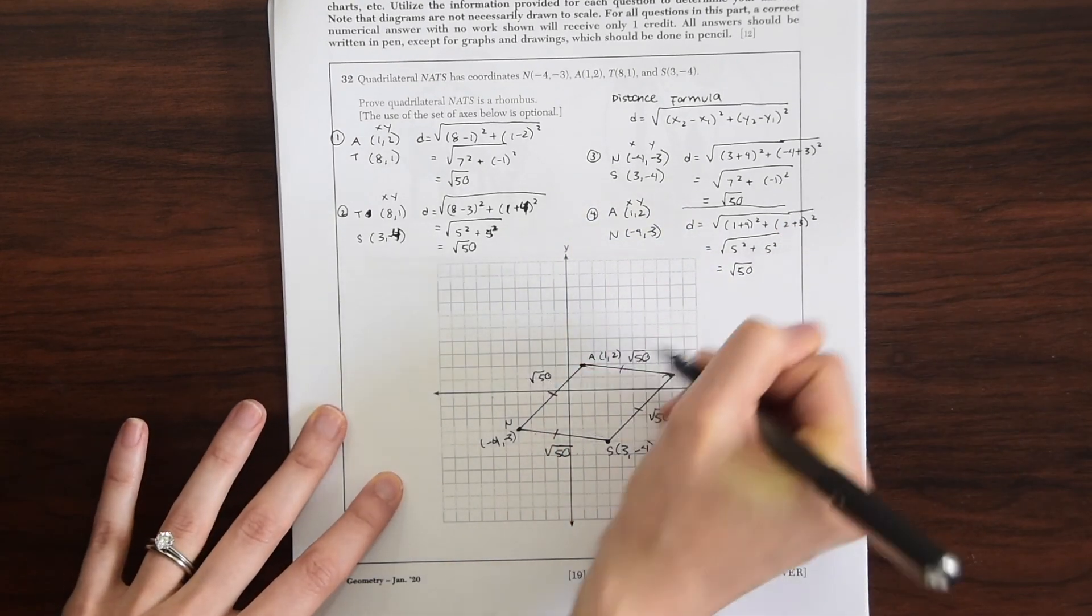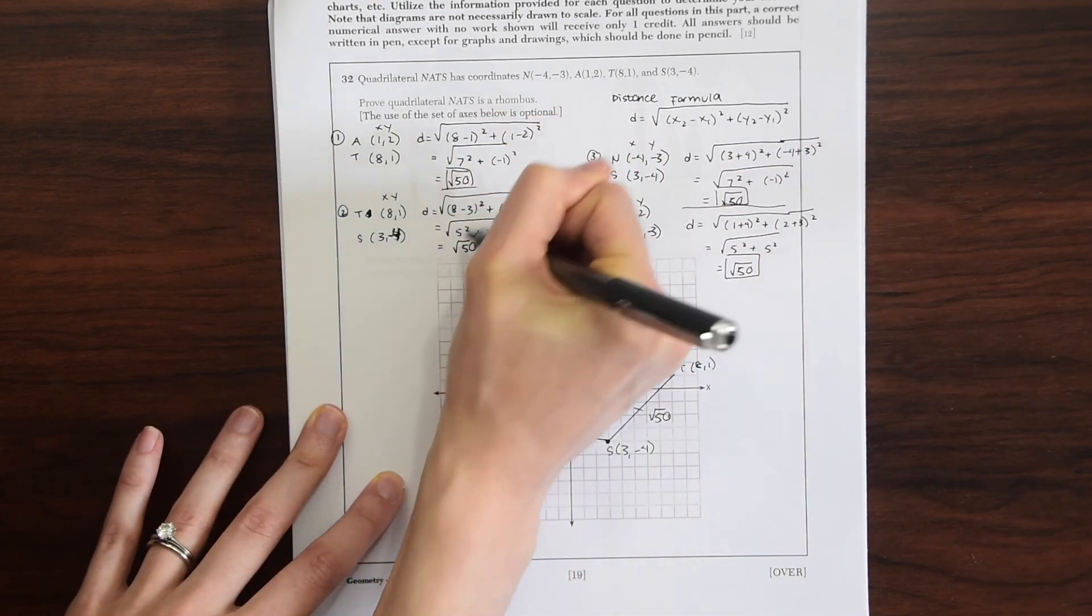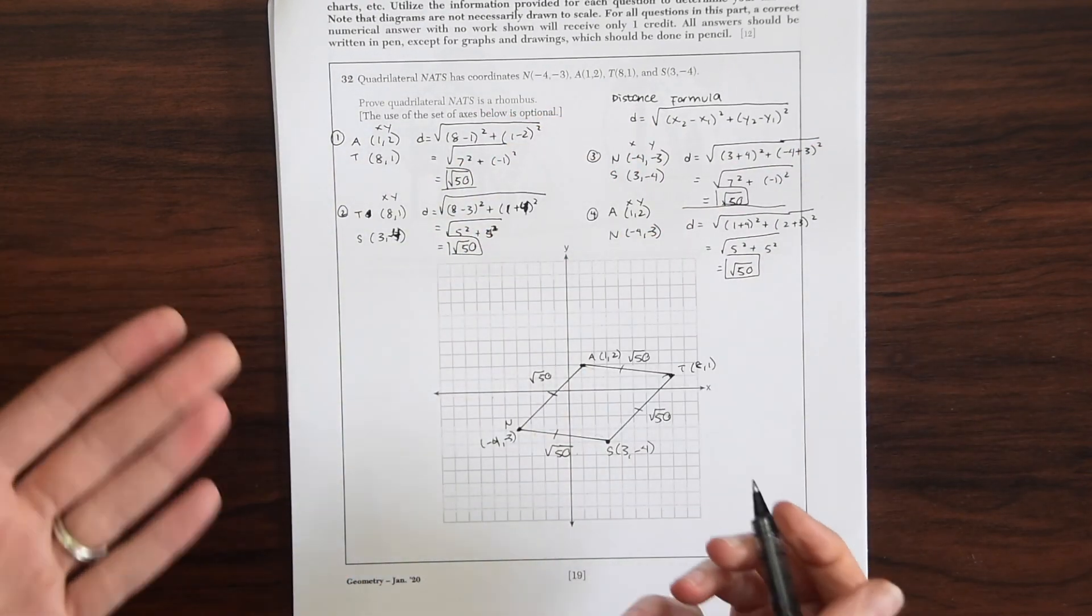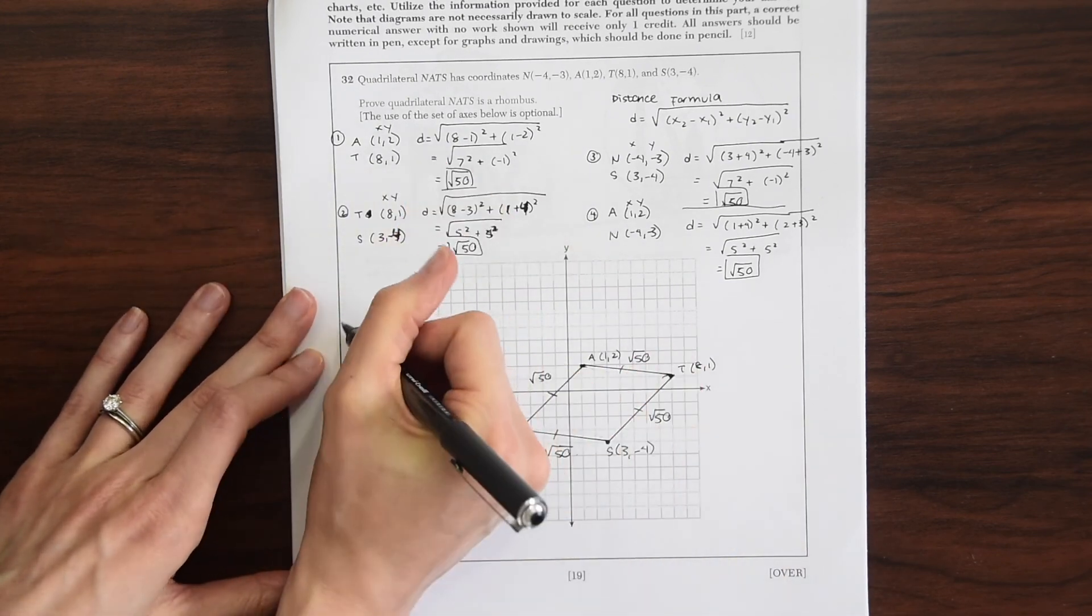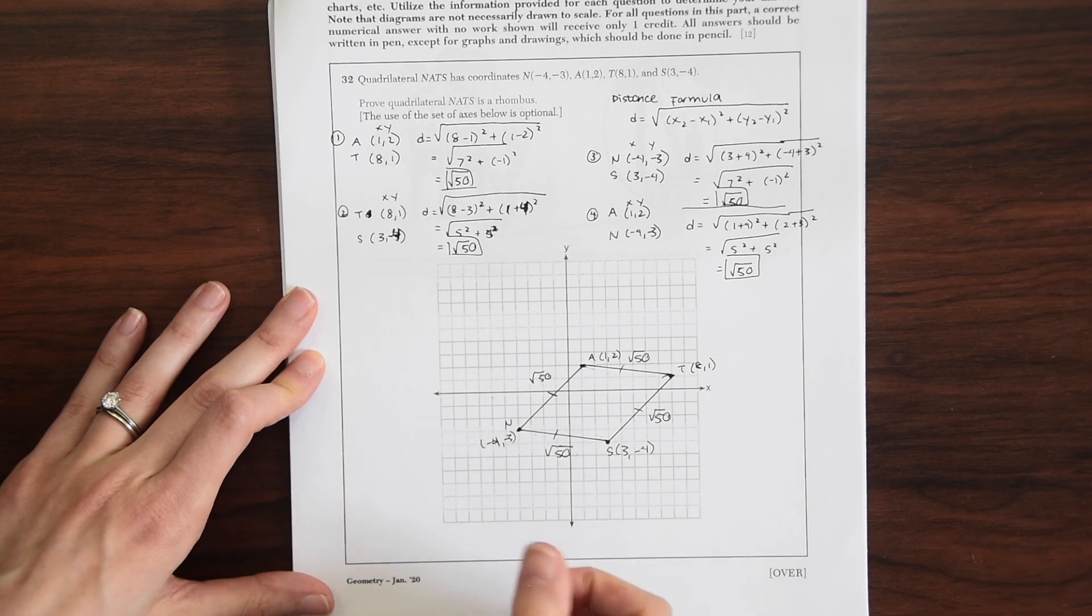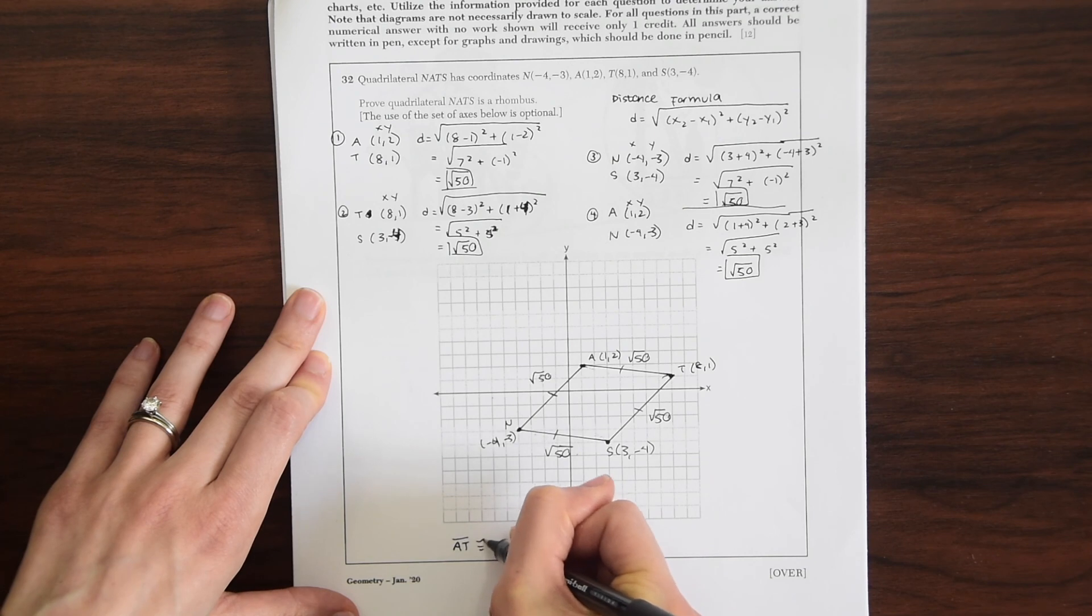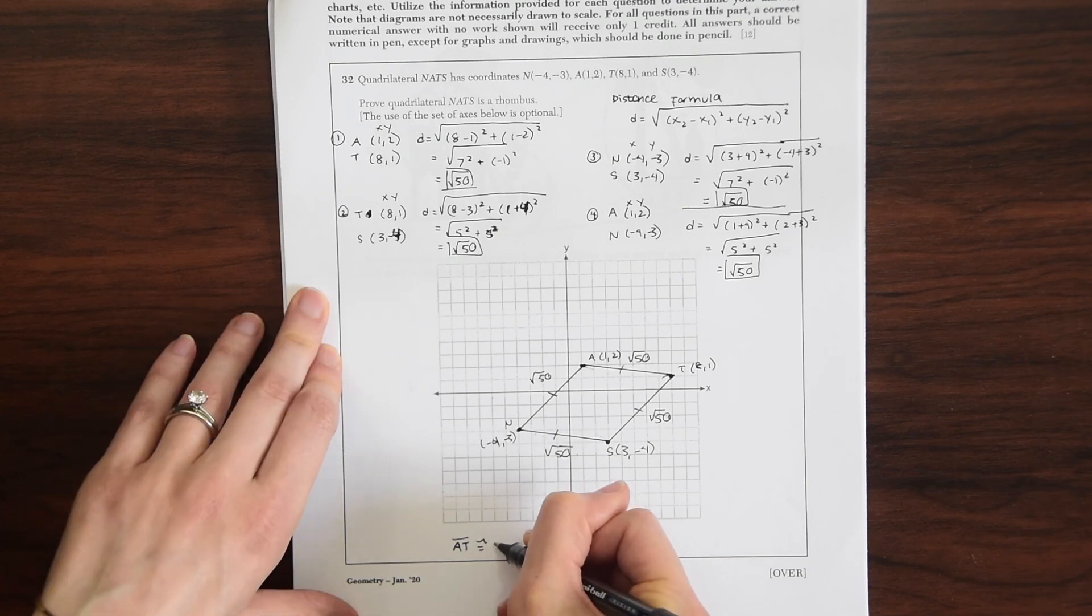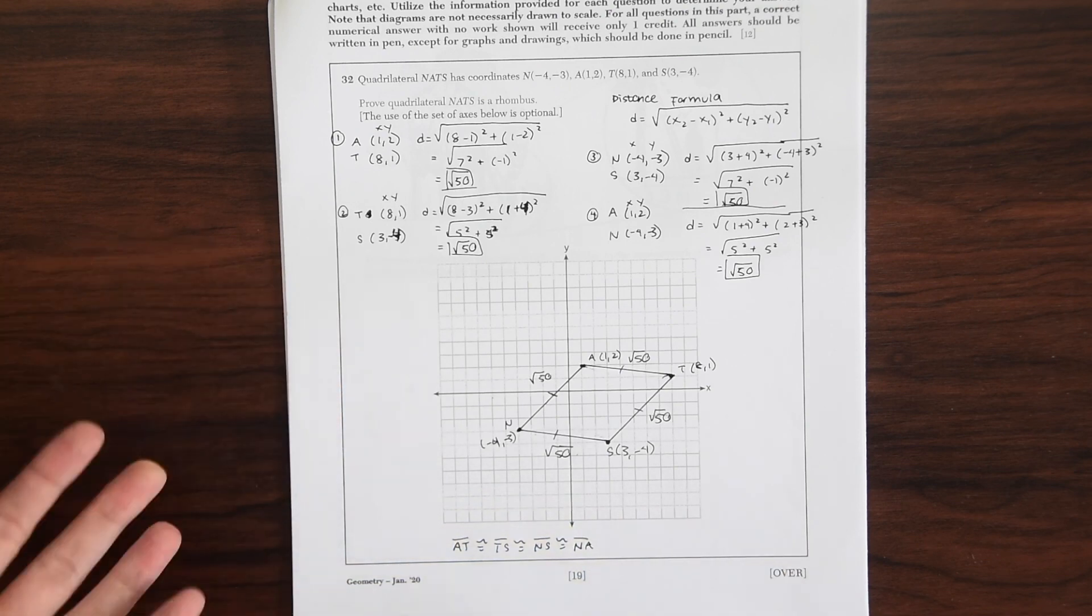So this looks good. So we proved all our sides are congruent. So we know this figure is a rhombus. Quadrilateral NATS is a rhombus. So we can also write this out. We could say all the sides are congruent by saying AT ≅ TS ≅ NS ≅ NA. And that's our answer.